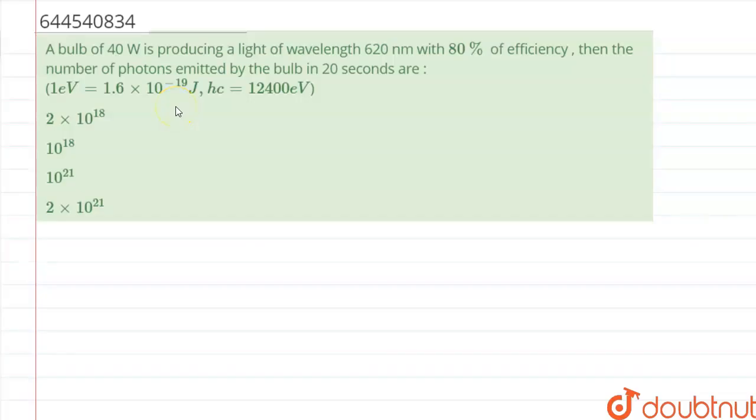Hello everyone, in this question we have been given a bulb of 40 Watt is producing a light of wavelength 620 nanometer with 80% of efficiency. Then the number of photons emitted by bulb in 20 seconds are. So let us start this question.